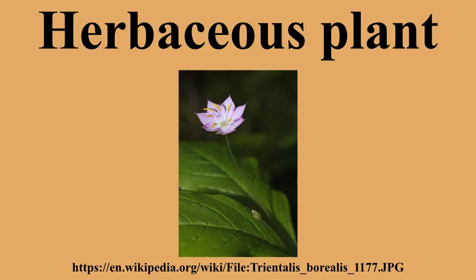Types of underground stems include bulbs, corms, stolons, rhizomes, and tubers. Examples of herbaceous biennials include carrot, parsnip, and common ragwort. Herbaceous perennials include potato, peony, hosta, mint, most ferns, and most grasses.